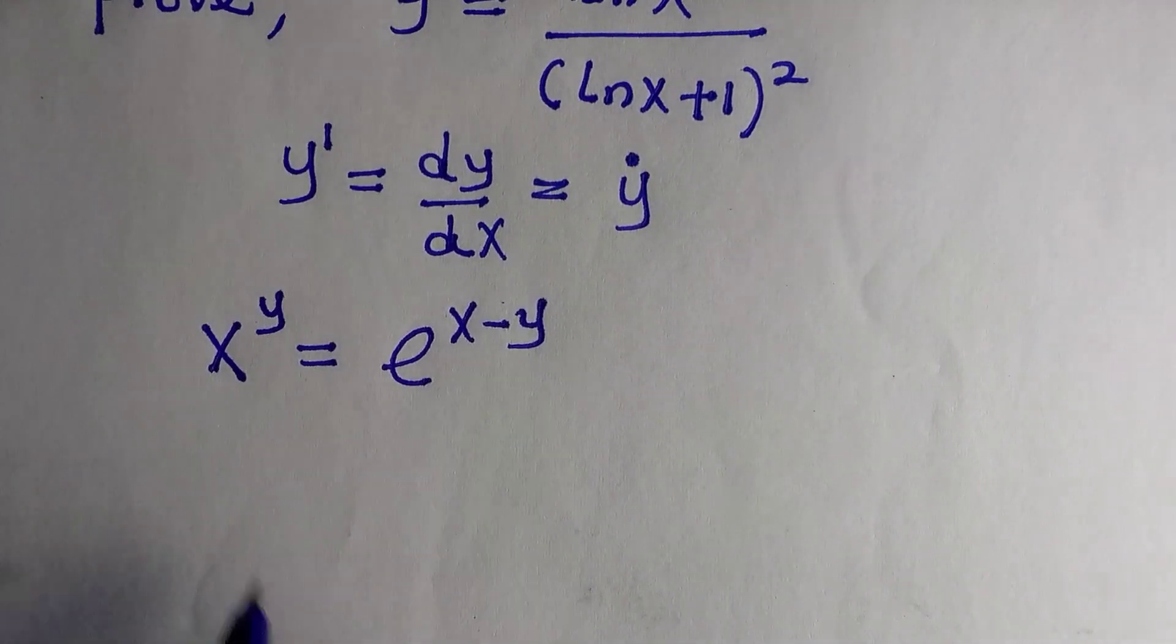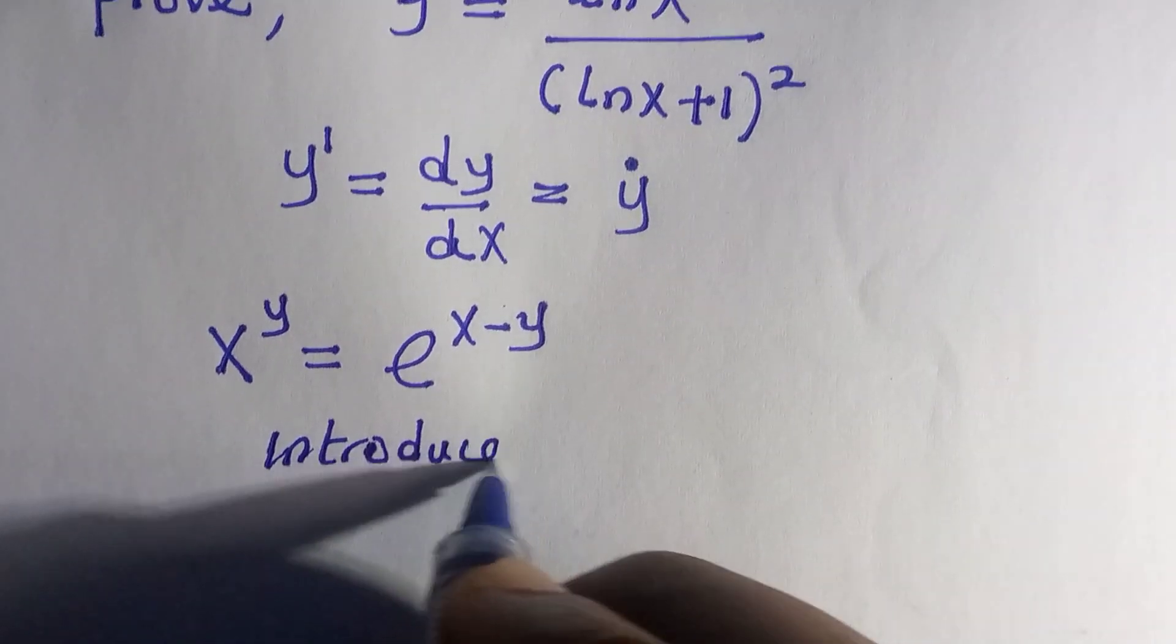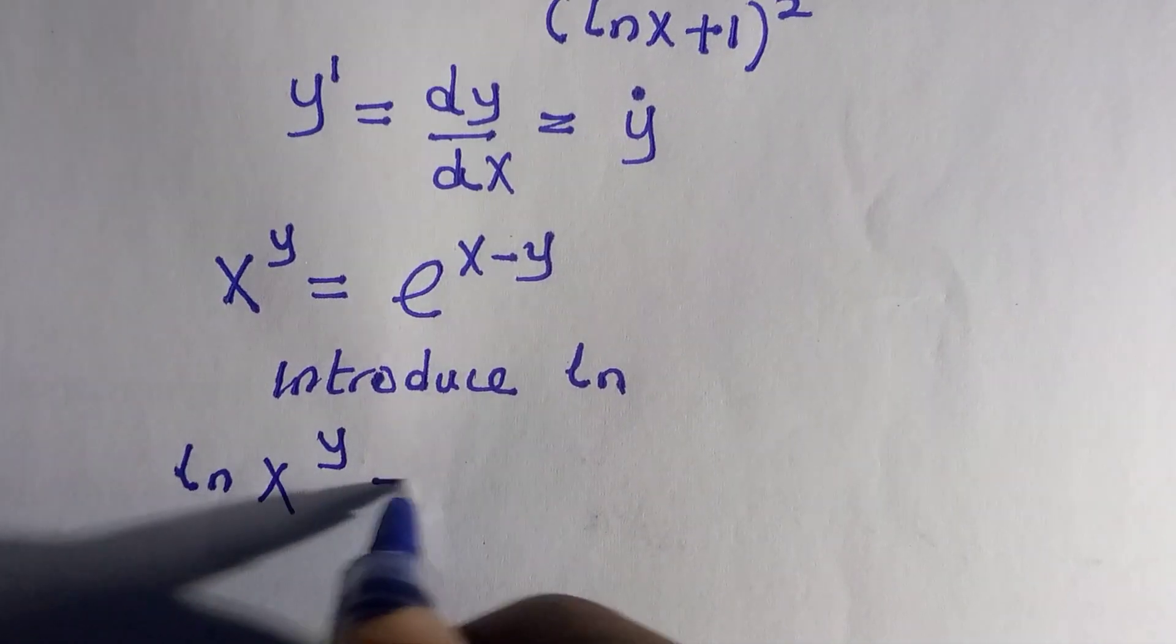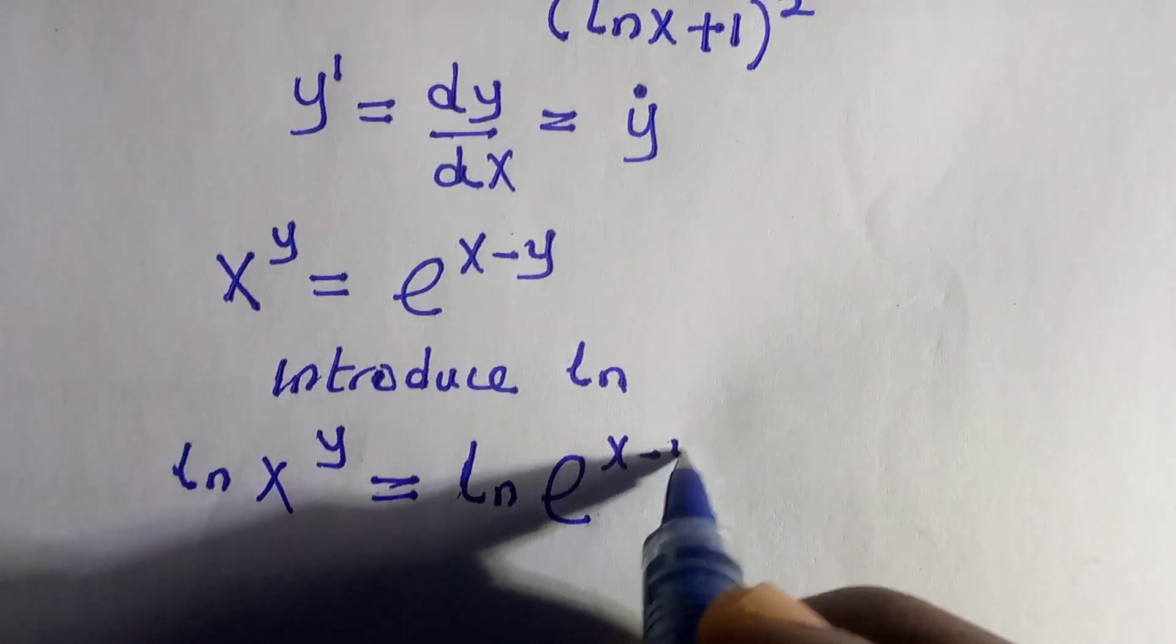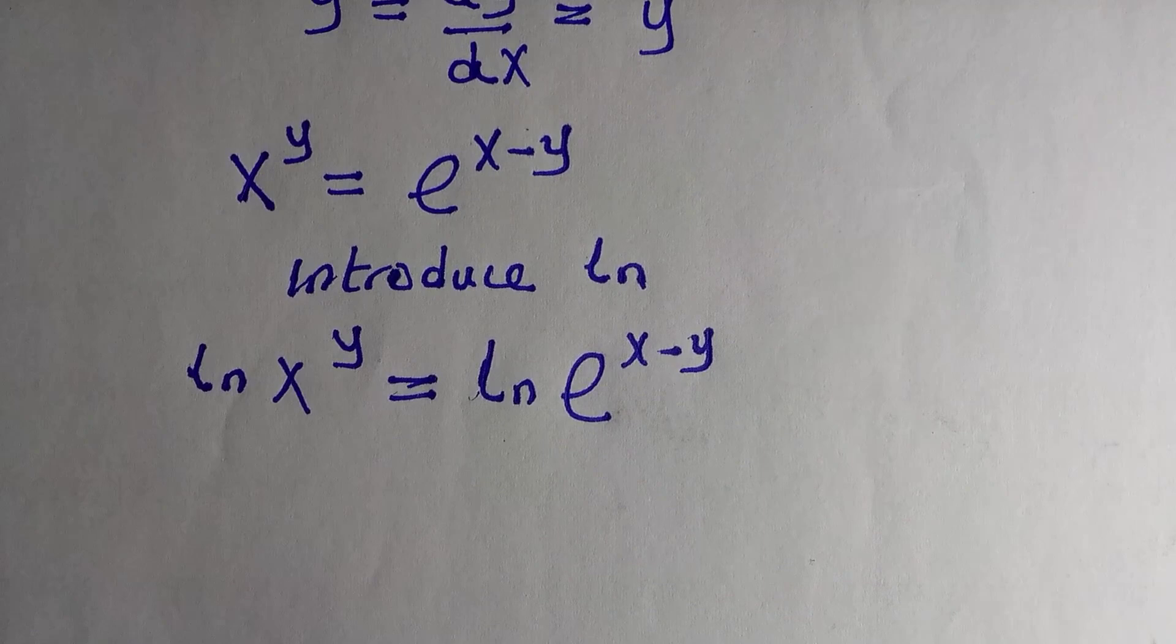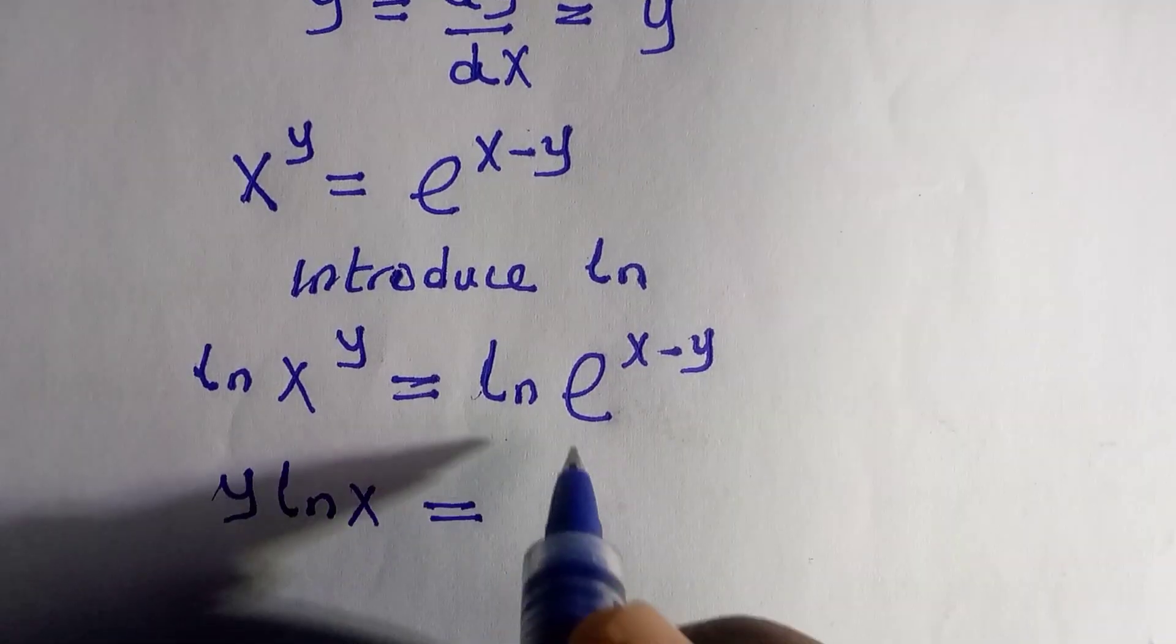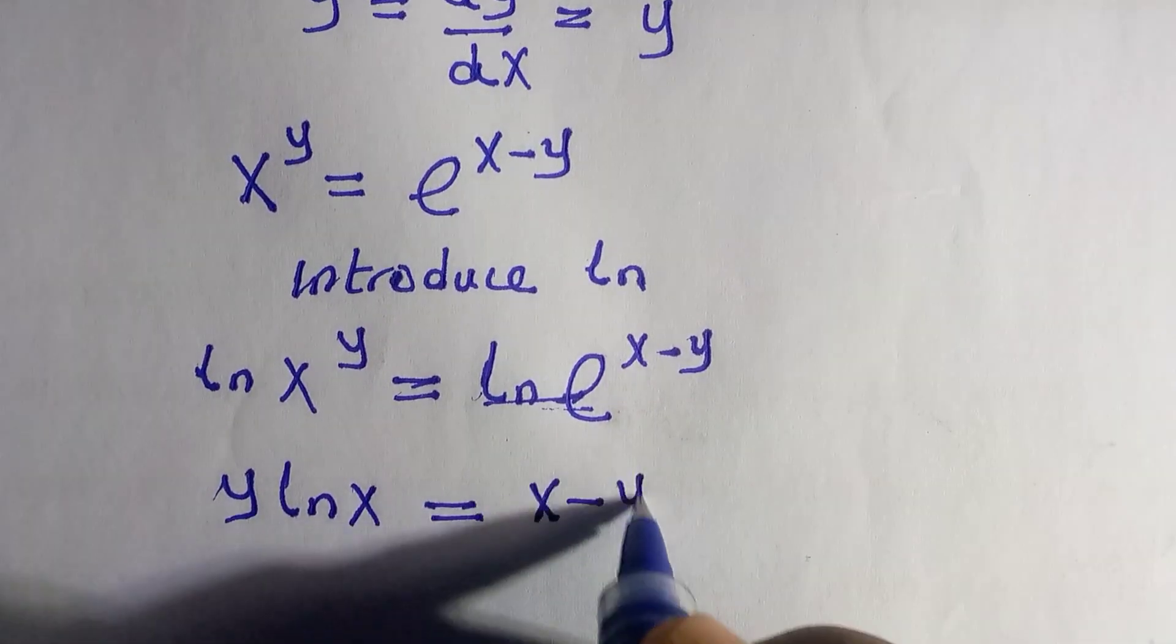For this we are going to introduce the natural logarithm to both sides to take all the power down and cancel where necessary. Then we have ln of x raised to power y equals to ln exponential x minus y. According to the rules of logarithm, the power will come down and here we have y ln x equals to the logarithm. The exponential and logarithm cancel and we have x minus y.